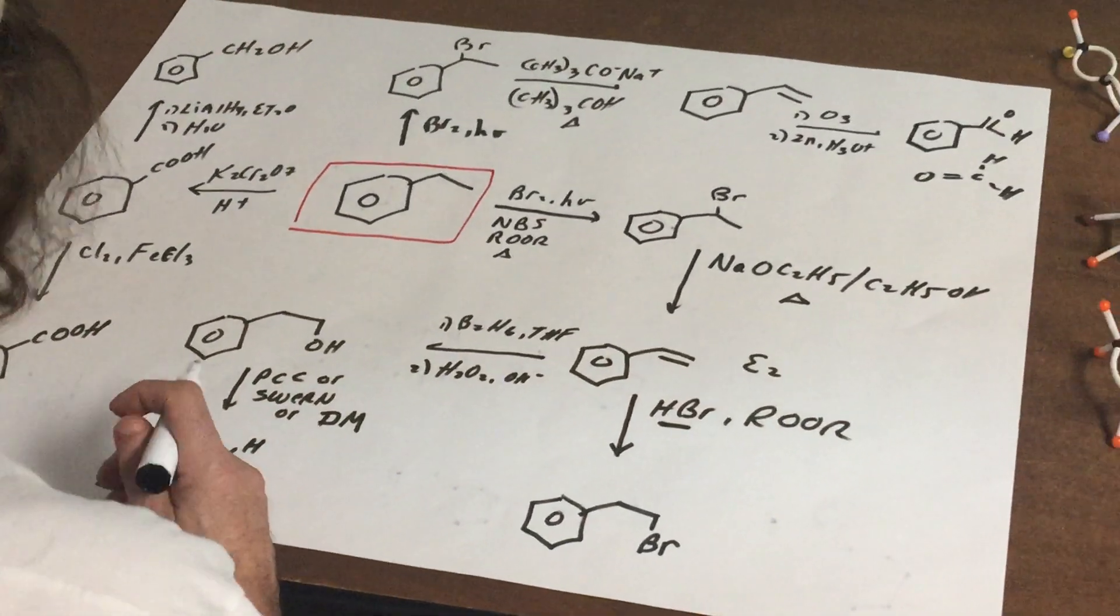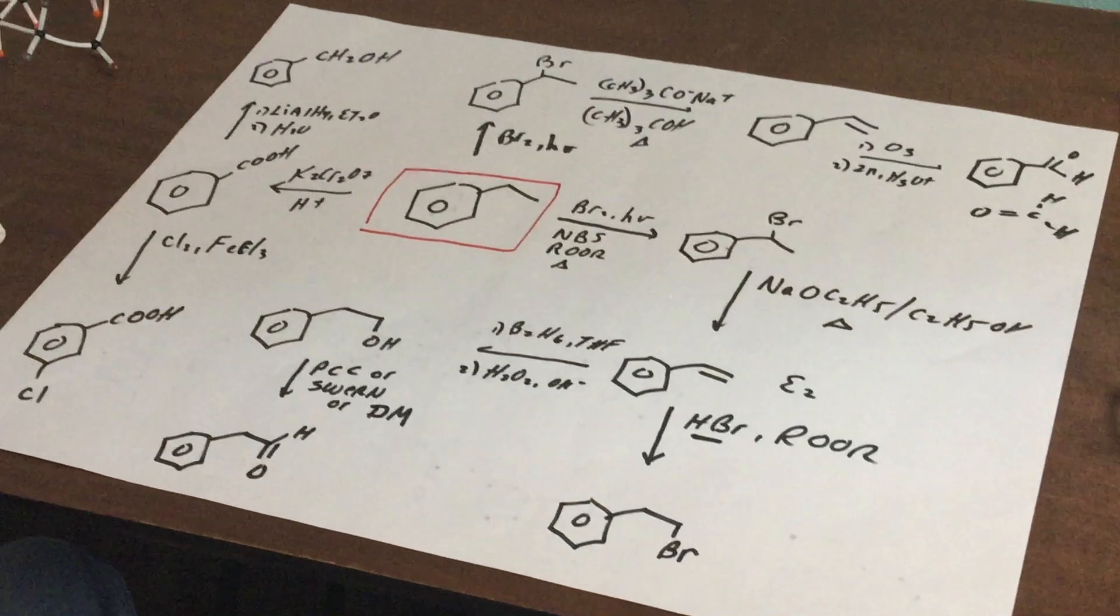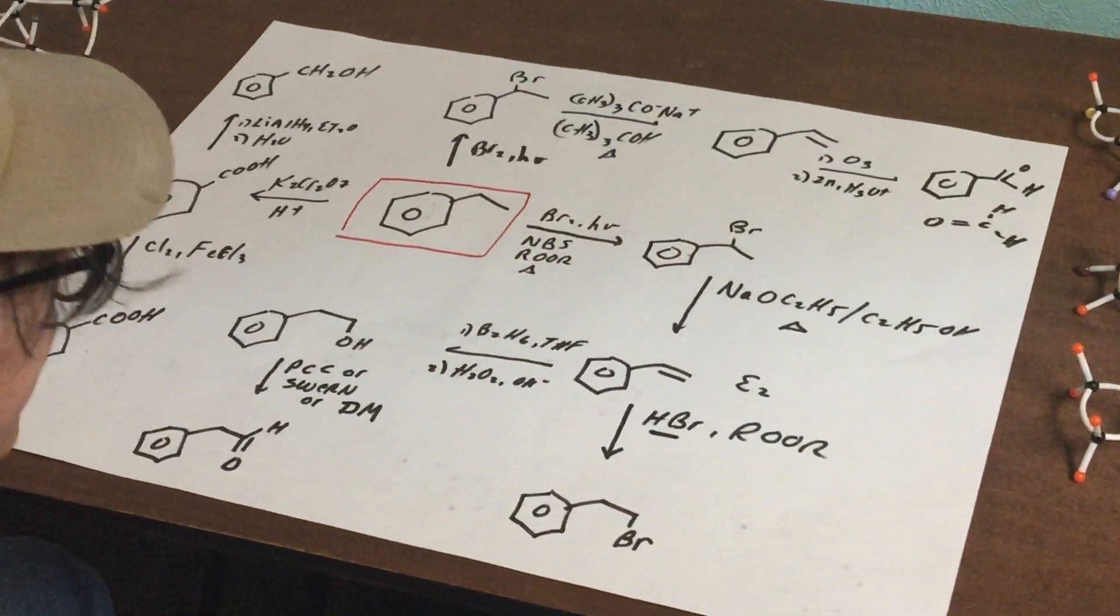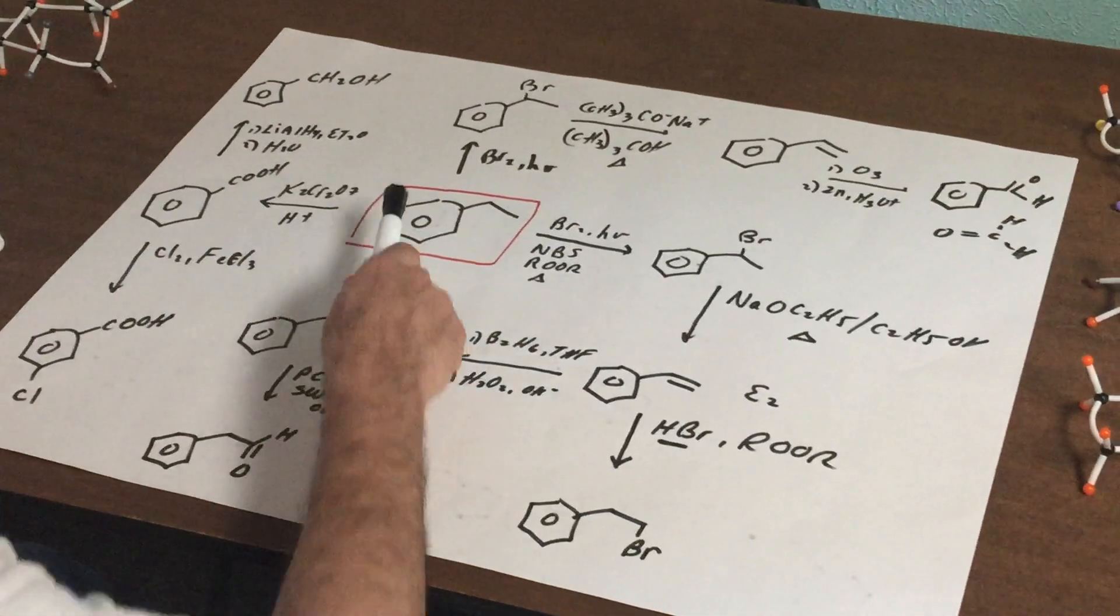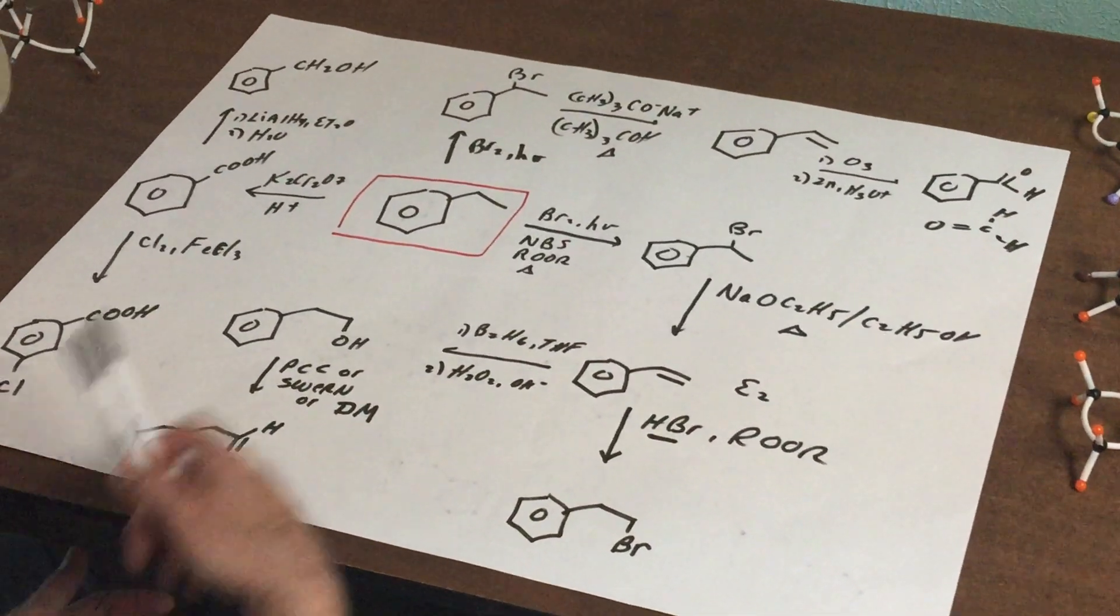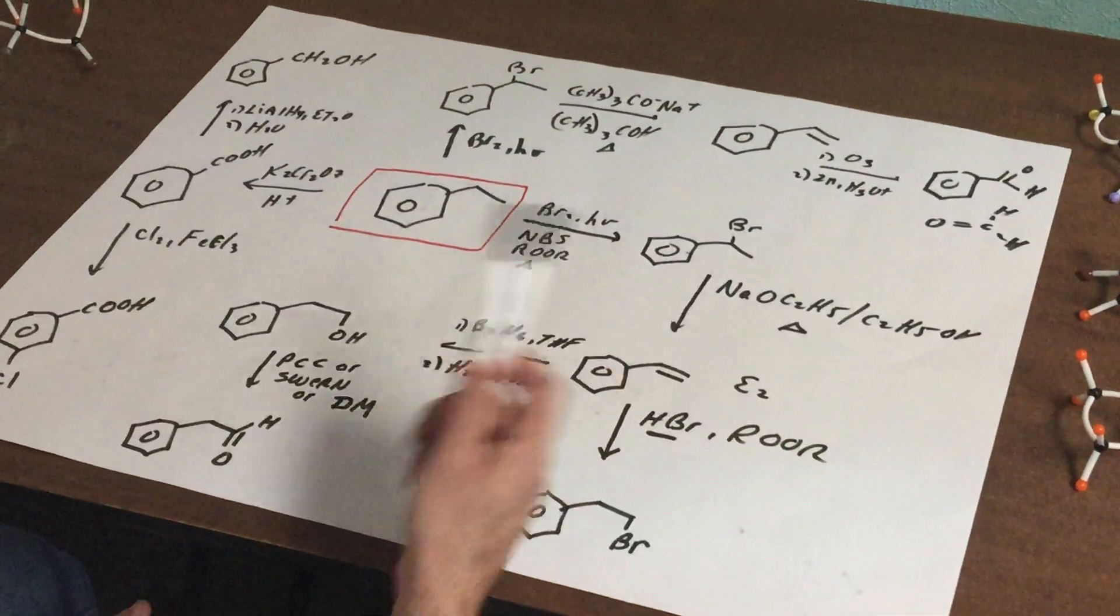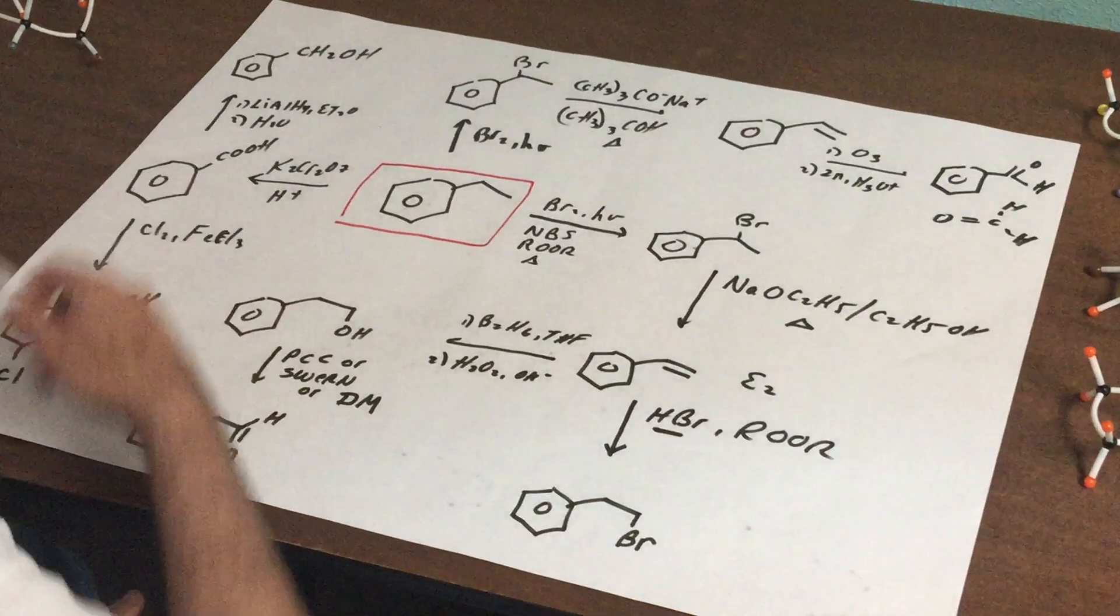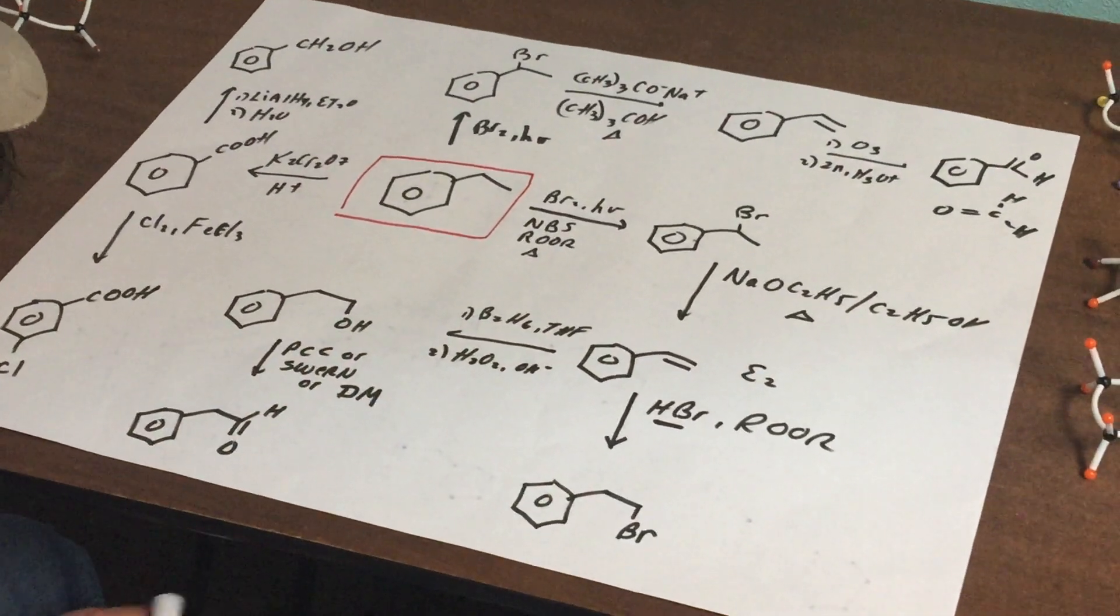That'll about wrap it up for a little baby roadmap. I've got a lot of these roadmaps in the destroyer, but this gives you a little bit of an idea of what to do on some roadmaps. So every one of these are fair game questions, from ozonolysis to using peroxide and HBr or B2H6.